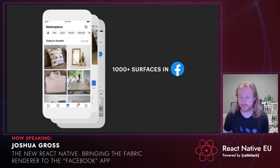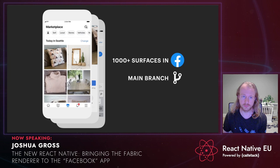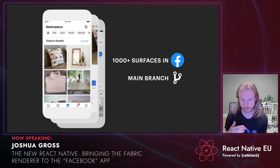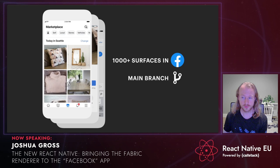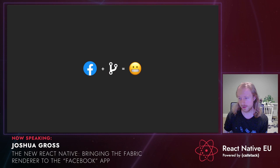Another unique part of our setup is that at Facebook, all of our apps using React Native use React Native from the main branch of GitHub. Whenever we make a change or merge a pull request, that change goes into our main developer build immediately, and then goes live to all Facebook users in the next weekly release. This gives us about a week to ensure every change is stable on every one of those 1,000-plus surfaces for all users.